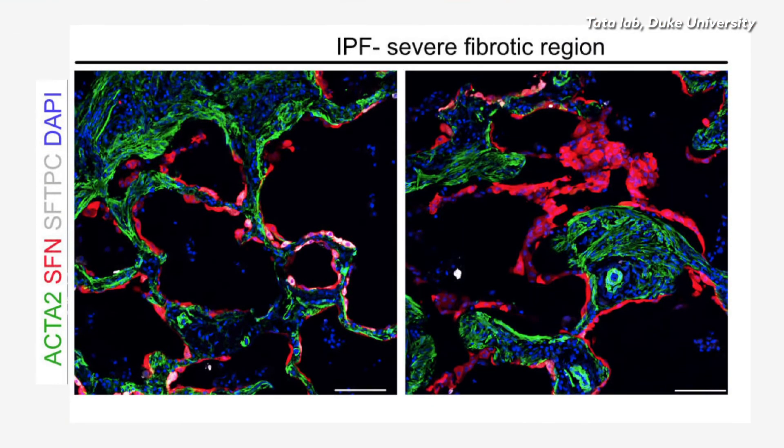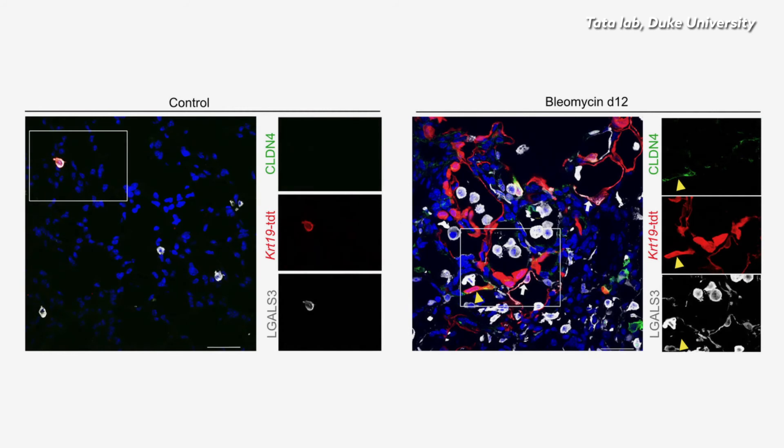Once the researchers knew what to look for, they found increasing numbers of transitional cells in scarred human lungs. This kind of damage can be seen when any number of harmful factors take hold of the lung, including toxins and infectious diseases like COVID-19.